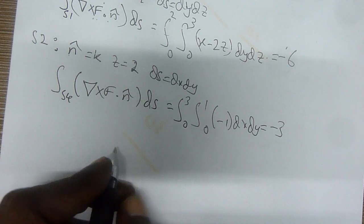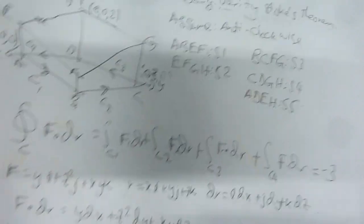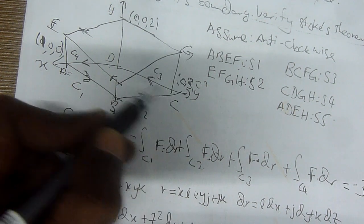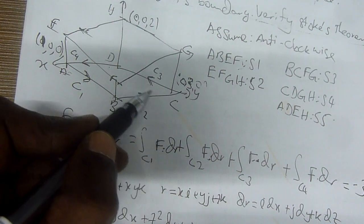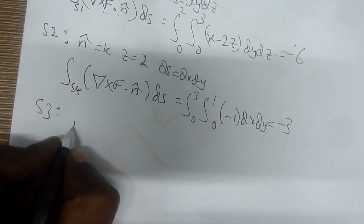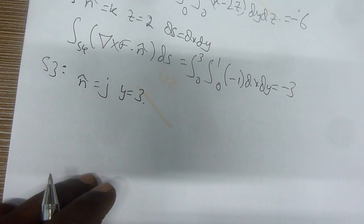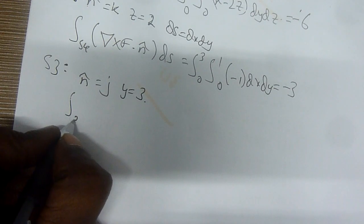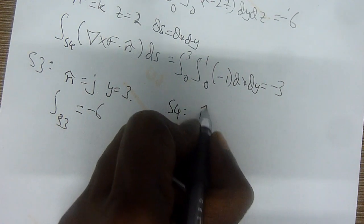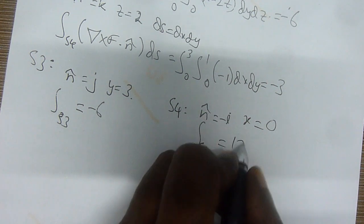What about S3? S3 is B, C, F, G. The normal direction follows y, so it's j, and the fixed point is y = 3, with dS = dx dz. If you can identify the properties well, then it's easier for you to calculate. Similarly, you can find S4: n = negative i, x = 0. When you calculate S4, you get 12.